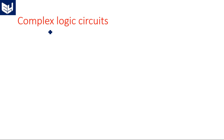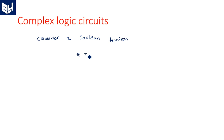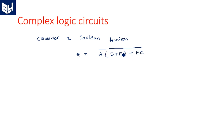A complex logic circuit is nothing but a different logic function consisting of three or more inputs. So let us consider the Boolean function Z, which is the output function, equal to A·(D+E) + BC, whole bar. So Z = A·(D+E) + BC, whole bar.